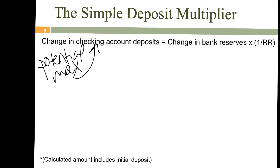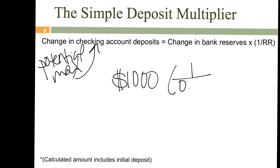Using the example we were doing: we had a $1,000 deposit and a 10% required reserve ratio, so that's 1 over 0.10. When you do this, be sure to write the percentage — 10% — as a decimal. When you do the calculation, 1 divided by 0.10 equals 10. And 10 times $1,000 equals $10,000. That was the potential maximum increase to the change in checking account deposits.